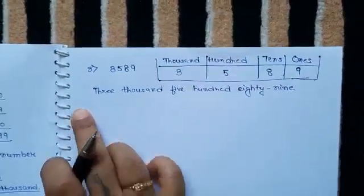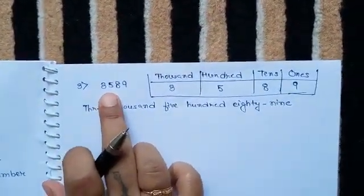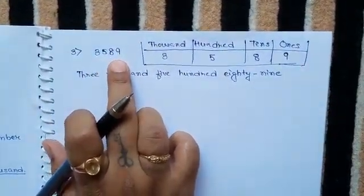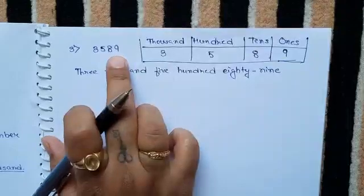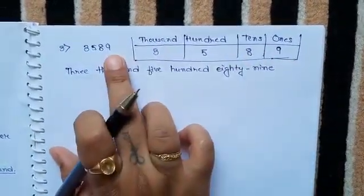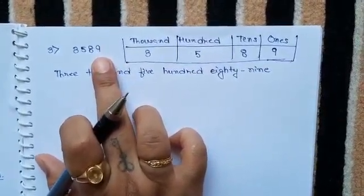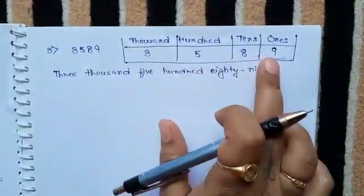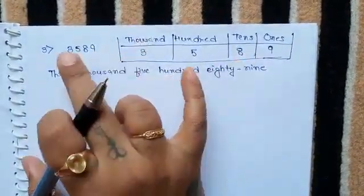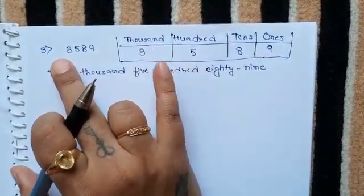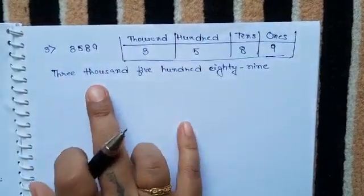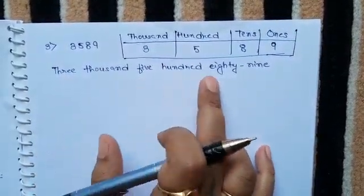Let us continue. Take another number: 3,589. As I had told, always start from the last digit. So 9 will be taken out and kept in ones place. 8 in tens place. 5 in hundreds place. 3 in thousands place. The number name is three thousand five hundred and eighty-nine.